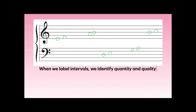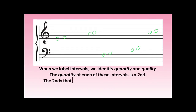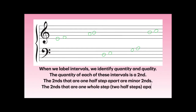When we label intervals, we identify quantity and quality. The quantity of each of these intervals is a second. The seconds that are one half-step apart, or neighboring keys on the keyboard, are minor seconds. The seconds that are one whole step, or two half-steps apart, are called major seconds.